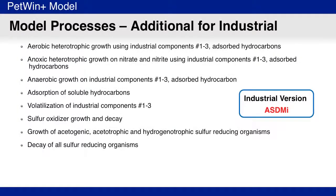At the core of PetWin Plus is a powerful extension of EnviroSim's industry-leading activated sludge and digestion model. This industrial version includes growth processes on adsorbed hydrocarbon and other industrial organics, potential volatilization of industrial organics, and processes for both sulfur oxidizing and reducing organisms.